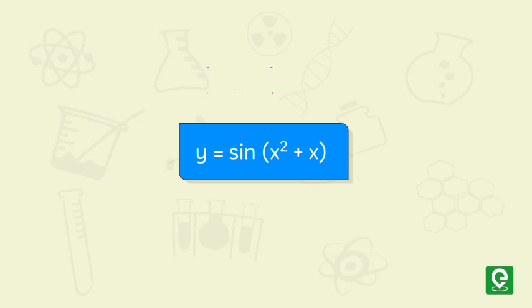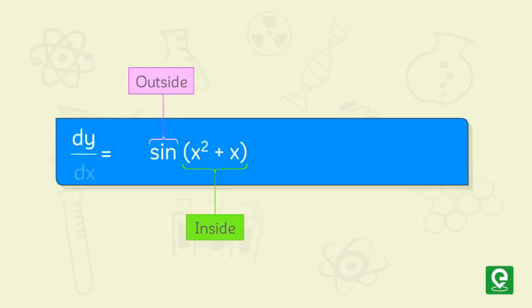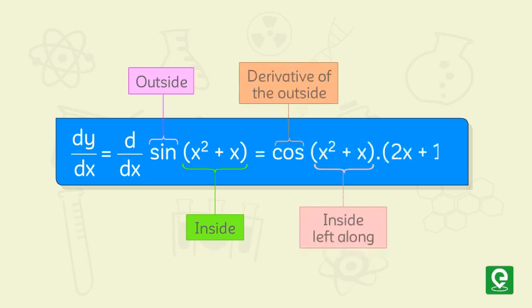Here sine is the outside function and x squared plus x is the inside function. Then according to chain rule, derivative of y equals d/dx of sine(x² + x) is equal to cos(x² + x) times (2x + 1).